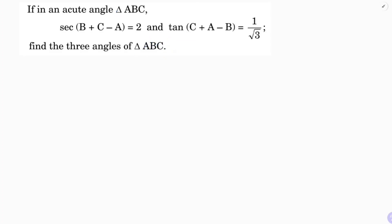This is a triangle ABC, so one equation we can write directly: A plus B plus C equals 180 degrees.